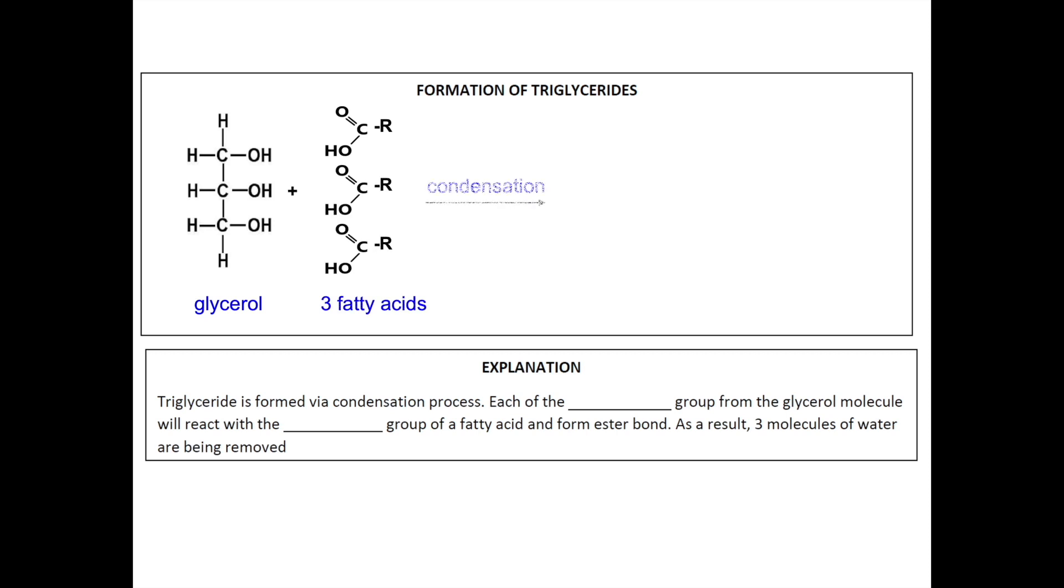Triglycerides is formed via condensation reaction, meaning through removal of water molecules. Water is H2O. So we remove OH from the carboxyl group of fatty acid and H from the hydroxyl group of glycerol, thus producing three water molecules. Since we have removed OH and H, the only atom that is left is oxygen atom. Therefore, we directly connect this oxygen to this carbon, forming ester bonds.